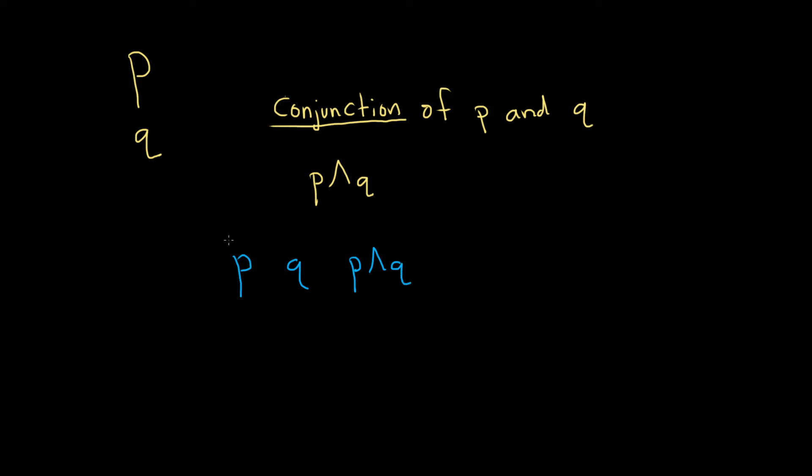So now we need to list all the possible truth values for p and q. So one simple case is where they're both true. So p is true and q is true. Another simple case would be p is true and q is false. And then we can alternate these so p is false and q is true. And the very last case would be when they're both false statements.